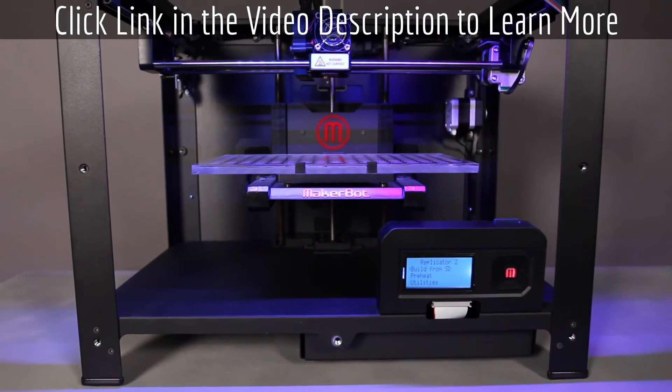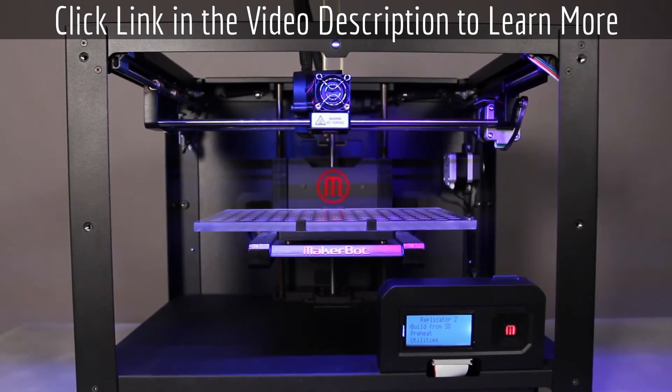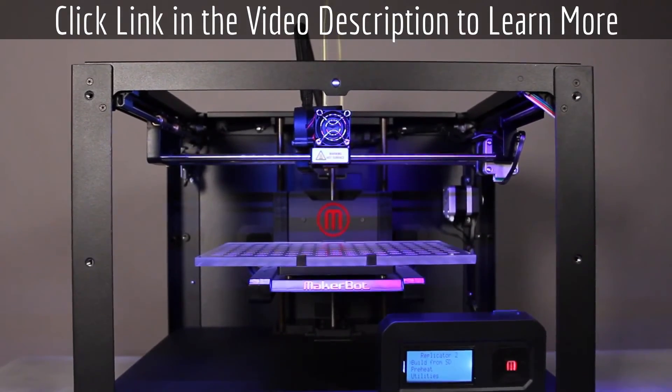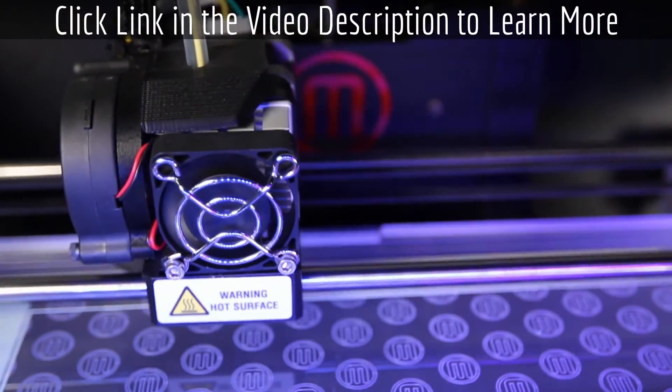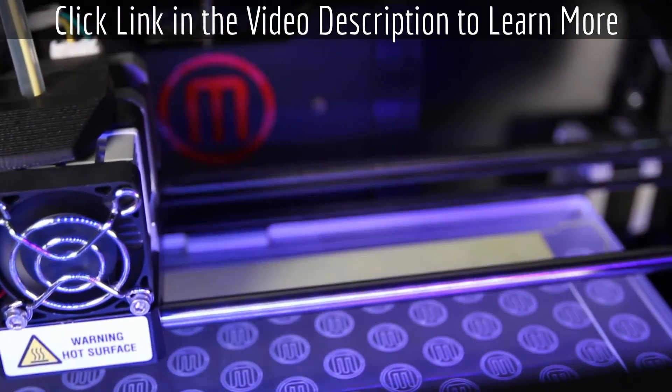We've given the MakerBot Replicator 2 a powder-coated steel chassis. This makes it incredibly durable and the stability it offers allows the machine to cruise at incredibly high speeds and make your things faster.